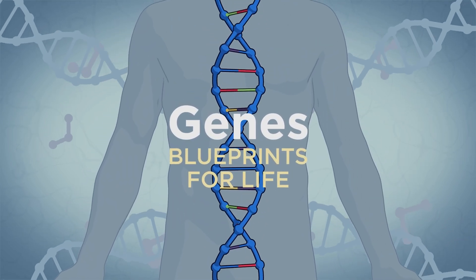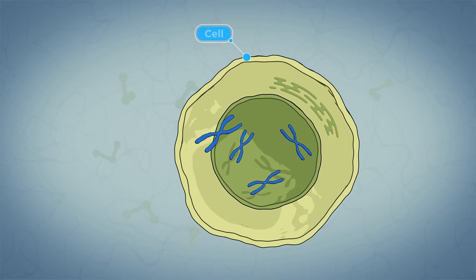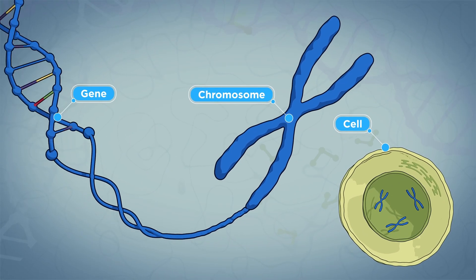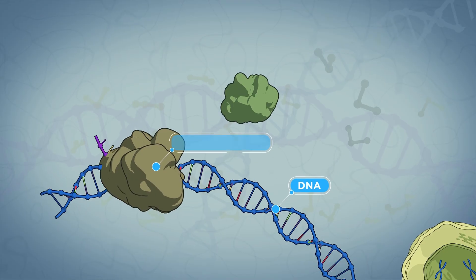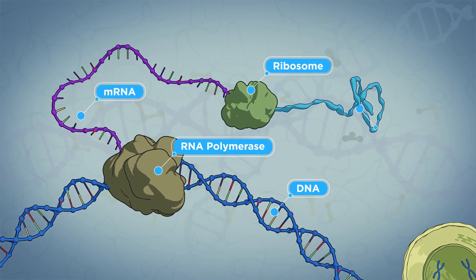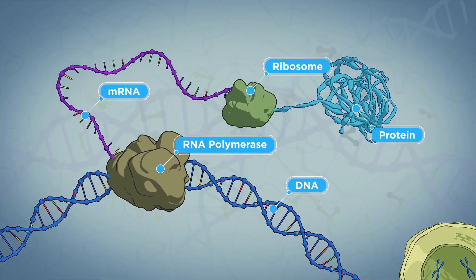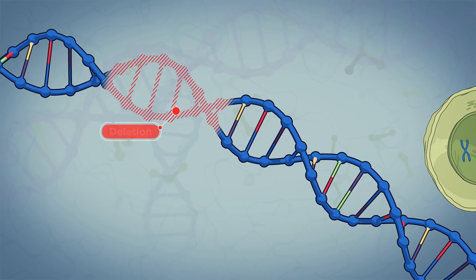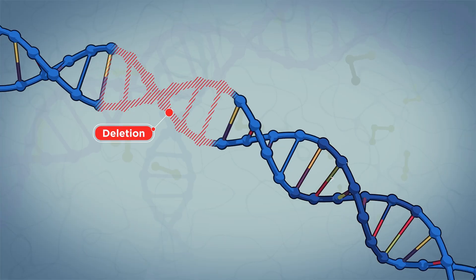What is AAV gene therapy? First, let's explore our genes — the body's blueprints. Genes are made up of specific pieces of our DNA. They provide the cells in our body with instructions for making the proteins that our bodies need to develop and function. Any change to the DNA in our genes can alter how our proteins are built and function.